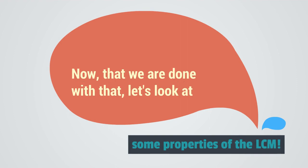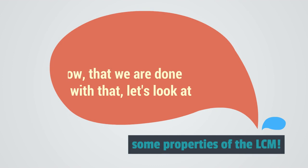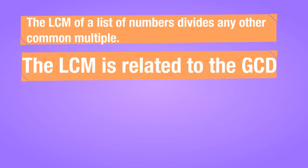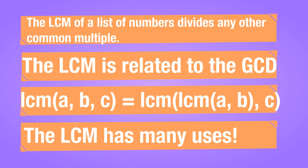Now that we are done with that, let's look at some properties of the LCM. The LCM of a list of numbers divides any other common multiple. The LCM is related to the GCD, which we look at in a future video. The LCM of a, b, c is equal to the LCM of the LCM of a, b, and c. And the LCM has many uses in word problems.